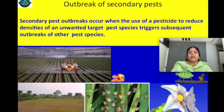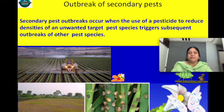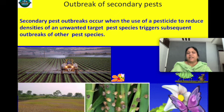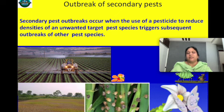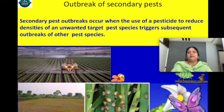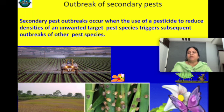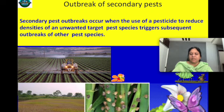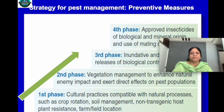The outbreak of secondary pests is another concern. When the major aim — whether in breeding programs or in pesticide usage — is control of primary pests, the secondary pests end up creating problems.